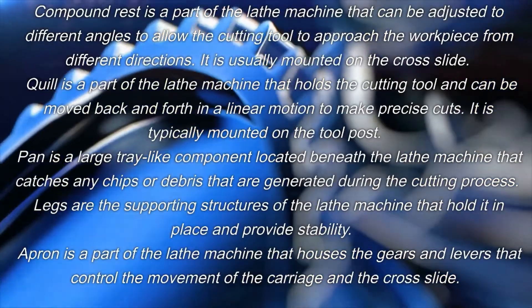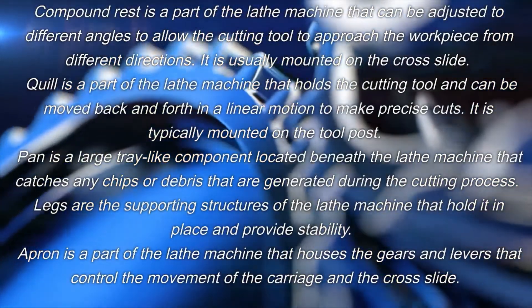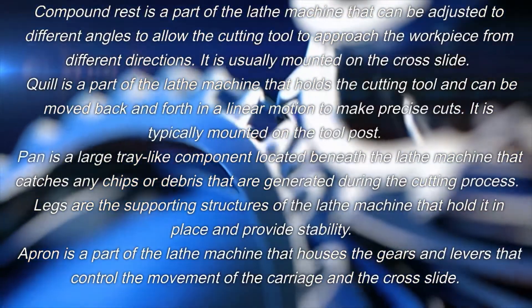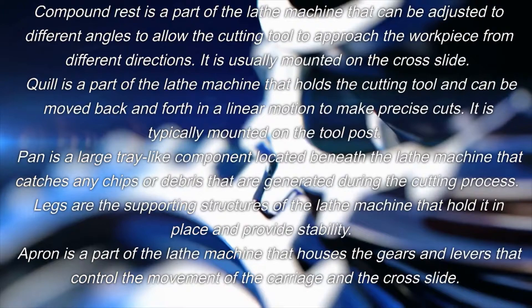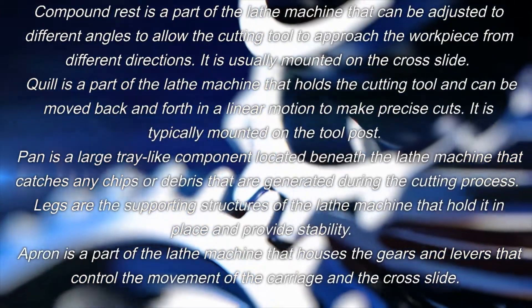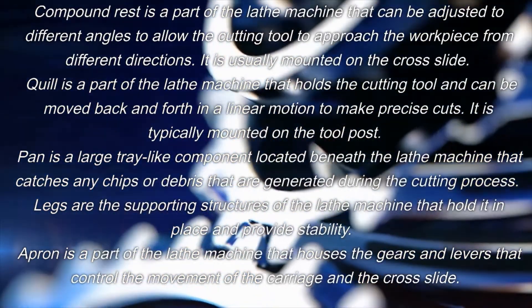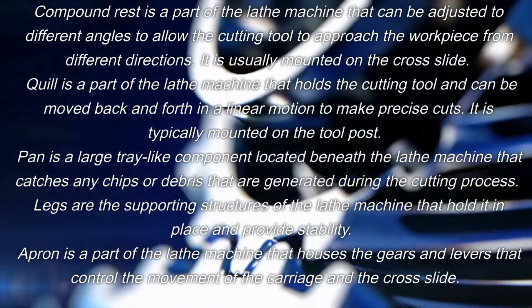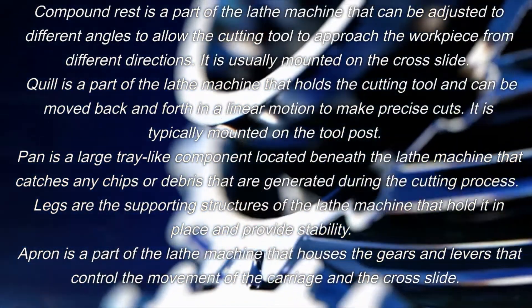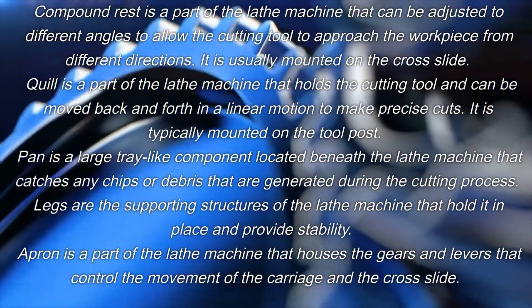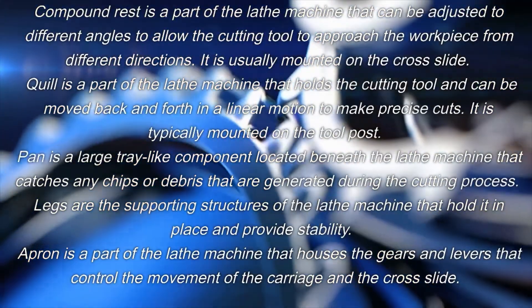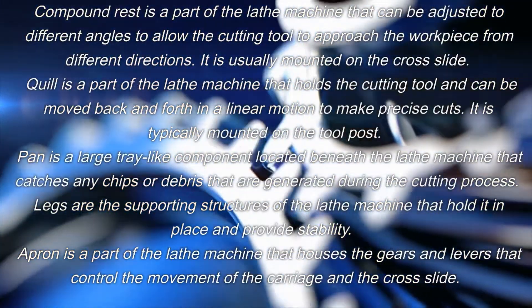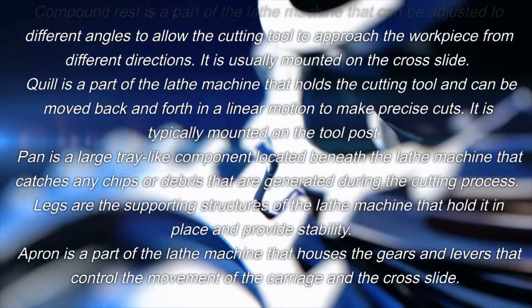Quill: a part of the lathe machine that holds the cutting tool and can be moved back and forth in a linear motion to make precise cuts; it is typically mounted on the tool post. Pan: a large tray-like component located beneath the lathe machine that catches any chips or debris generated during the cutting process.